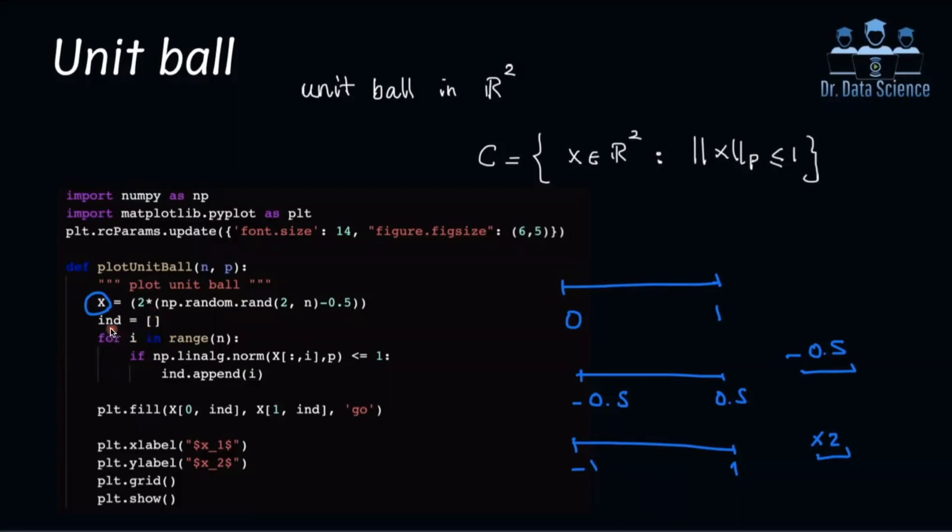And then I'm going to initialize this list, which I'm calling ind or int. And the idea is that I want to have a for loop and find the p-norm of each column of this matrix x. So this is going to be a vector norm. And if it is less than or equal to 1, I'm going to save or store that index. And at the end, I'm going to plot the interior of those data points using plt.fill.